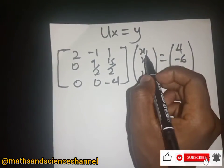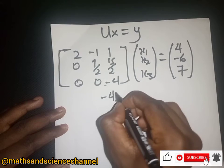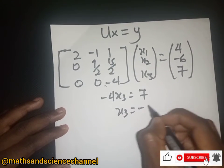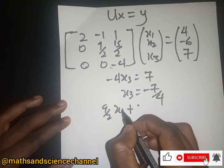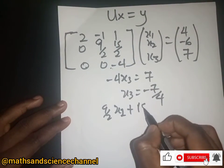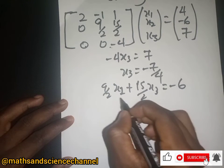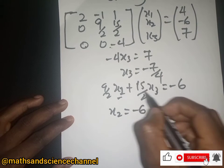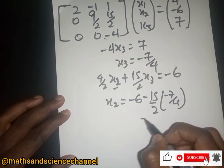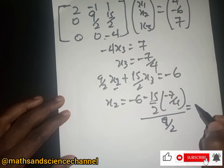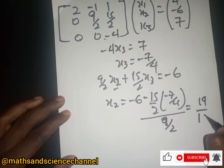From the third row: negative 4 times X3 equals 7, so X3 equals negative 7 over 4. From the second row: 9/2 times X2 plus 15/2 times X3 equals negative 6. Substituting X3 equals -7/4 gives 9/2 times X2 minus 15/2 times 7/4 equals negative 6, so X2 equals 19/12.